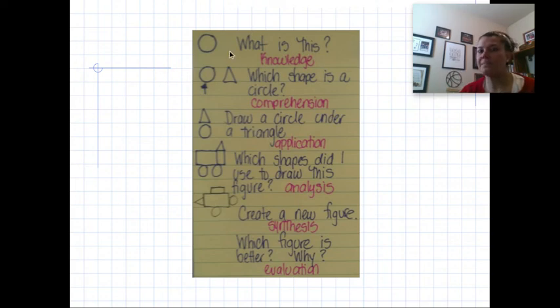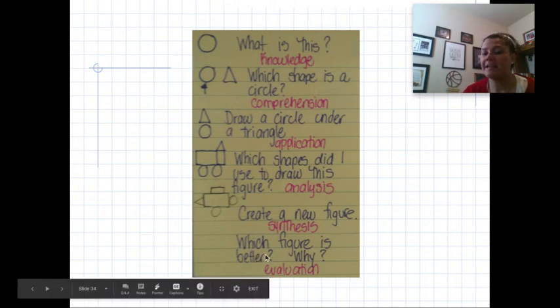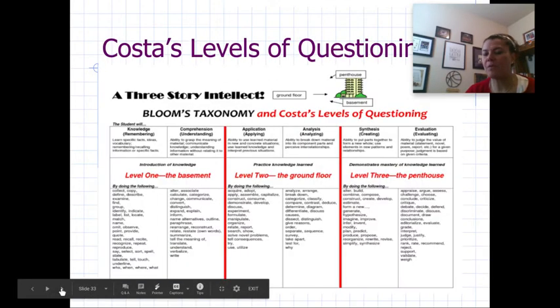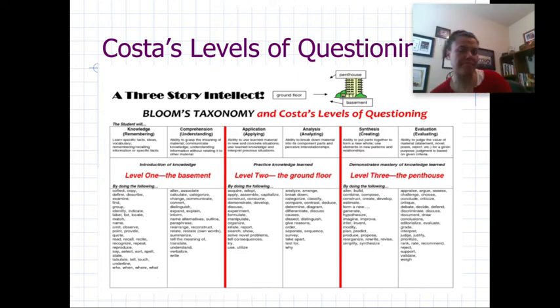Analysis: which shapes did I use to draw this figure? Synthesis: create a new figure from these shapes. And lastly, evaluation: which figure is better and why? We can see there is difference between Costa's and Bloom's. Costa's has evaluating as the top priority or top level of thinking, whereas Bloom's has creating as the top. But what you can see from Costa's is they're both in that same section of upper levels of thinking. So that's all in terms of our lecture.